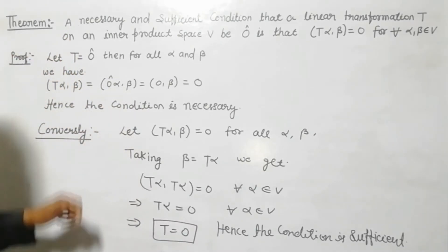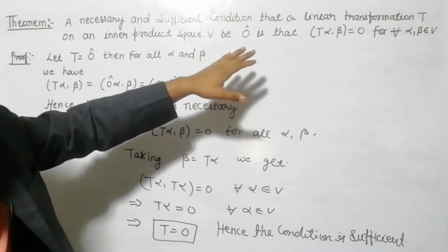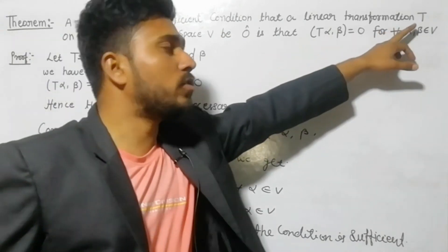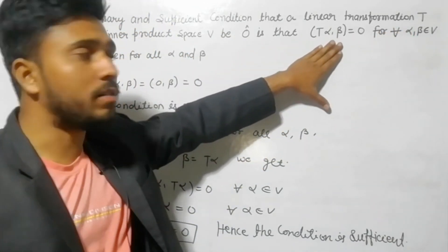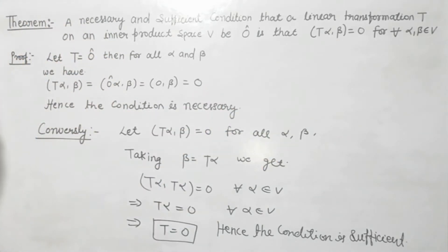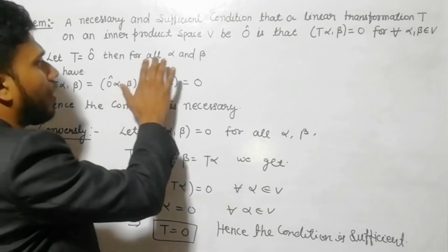So now let's see how we can prove this theorem. Students, here we'll take this approach - first we'll assume that the linear transformation T is zero. If this transformation T is zero, then we have to show that (T(α), β) will be zero. Let transformation T = 0, then for all α, β...